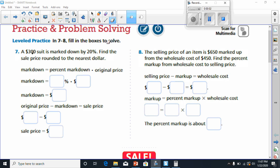Alright guys, today we're going to be doing markup and markdowns. Let's go ahead and look at number seven. First we see that we've got a $300 suit that is marked down for 20%, so that means we'll put 20% here and the 300 has to go here.